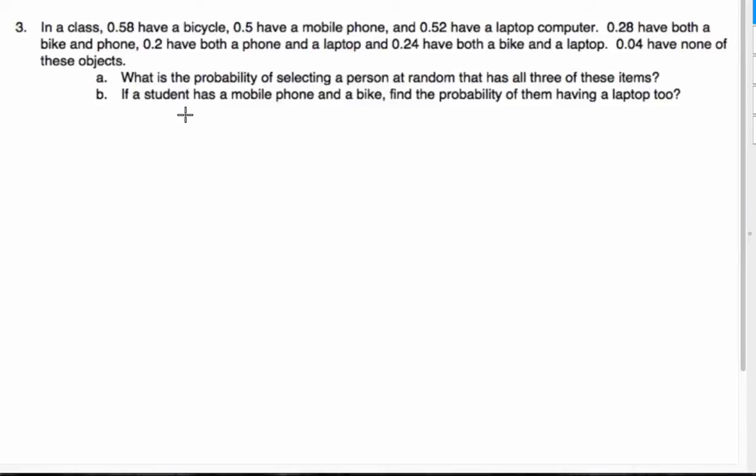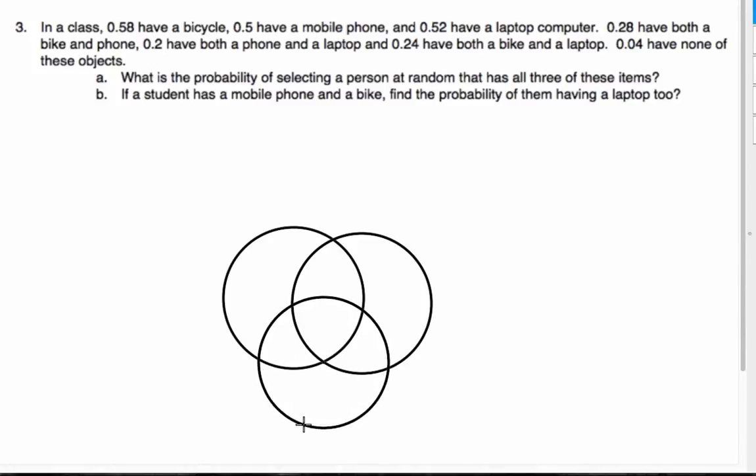Okay, so in this problem here, we have a class where 0.58 have a bike, somebody with a mobile phone, a laptop, some have both of each scenario, and some have none. This is a classic scenario of having a Venn diagram with three regions. So let's make a Venn diagram with my three regions, and we'll have my bicycle, my phone, and my laptop.